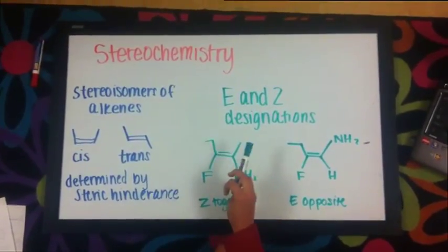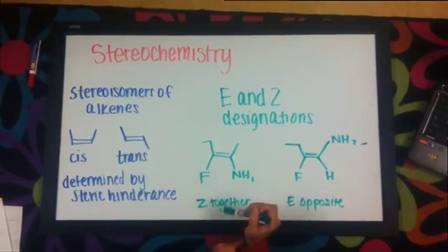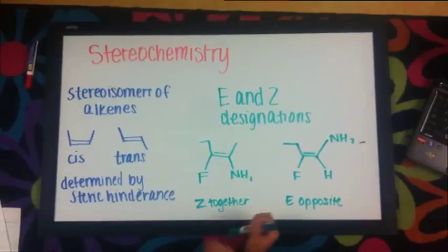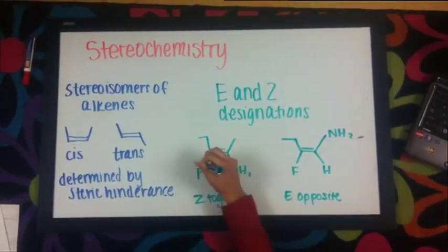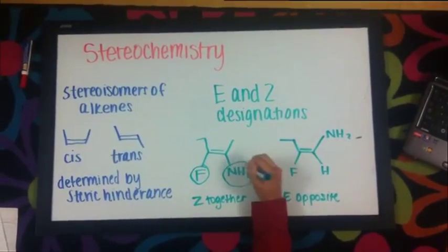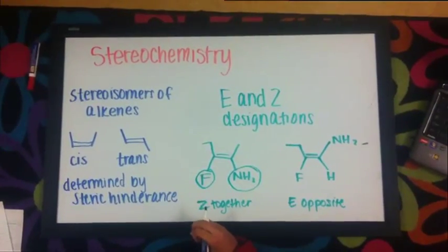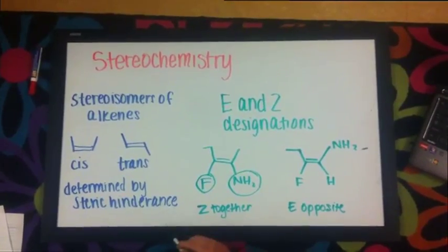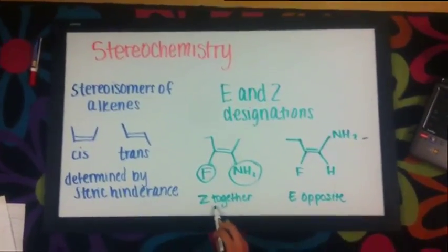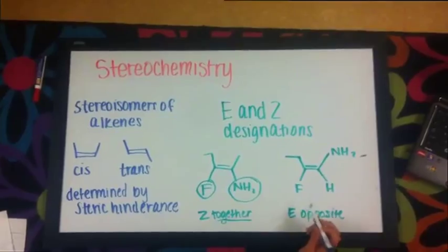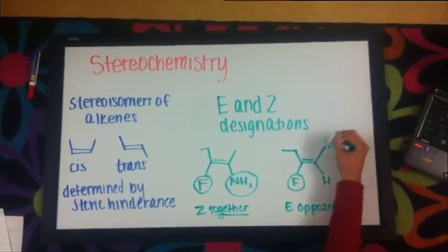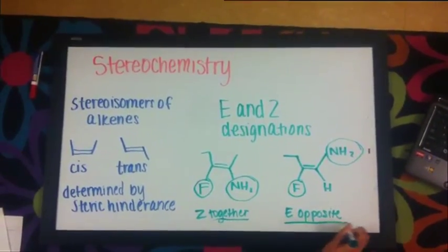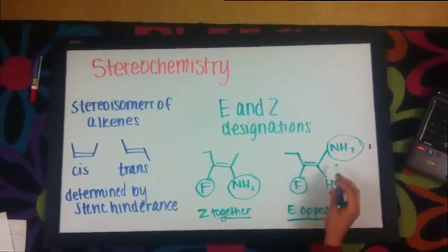E and Z designations are different. We are looking at the substituents in order of importance. F and NH2 are the most important substituents because they have the most molecular weight, so when they are on the same side or together, it is Z. On this other example, F and NH2 are on opposite sides, so it is E formation because the substituents that are most important are on opposite sides.